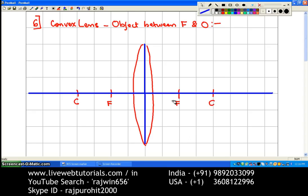Now we are supposed to place the object between F and O. O is this point, that is the center of the lens, that is the optical center. So the object will be placed between these two points. Now again, this precaution has to be taken that the object is not very close to F. So I am drawing this object somewhere in the middle over here.